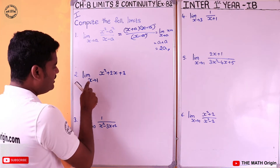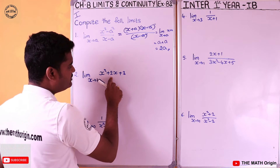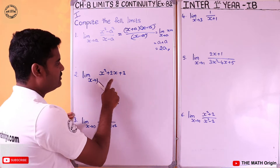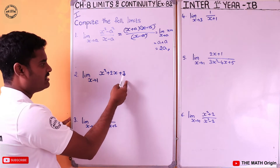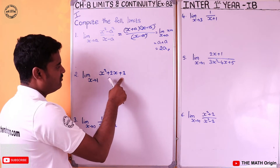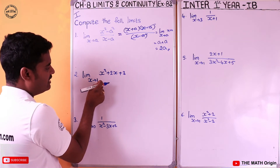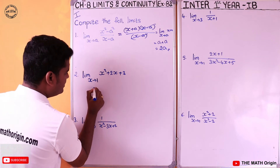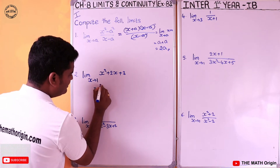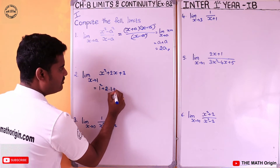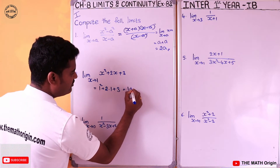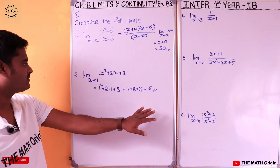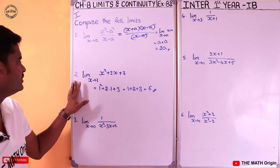Second question: limit x tends to 1 of x² + 2x + 3. Since there is no cancellation needed, we directly substitute x = 1. That equals 1² + 2(1) + 3 = 1 + 2 + 3 = 6. With this, we completed the second question.